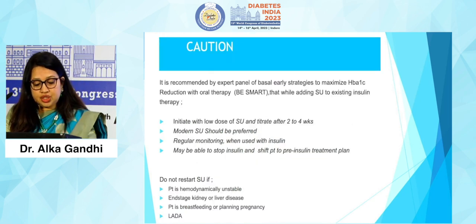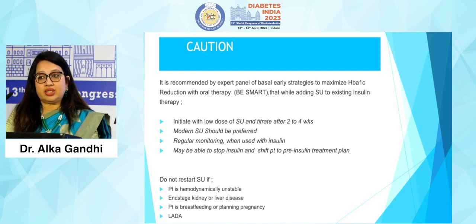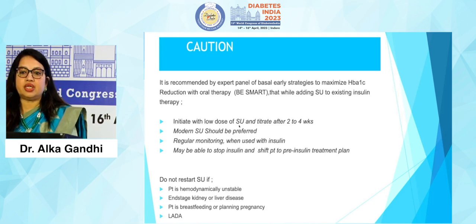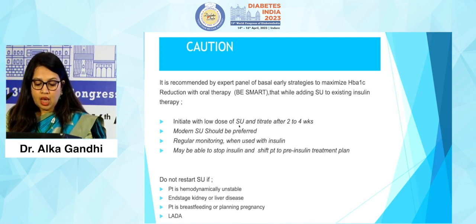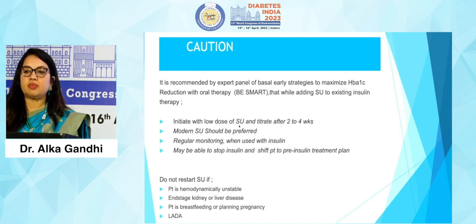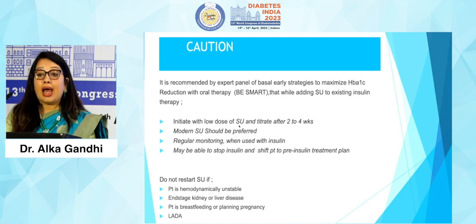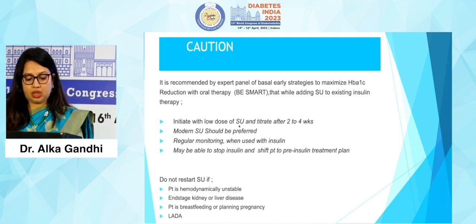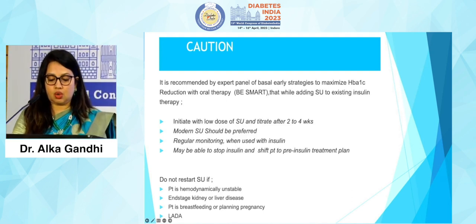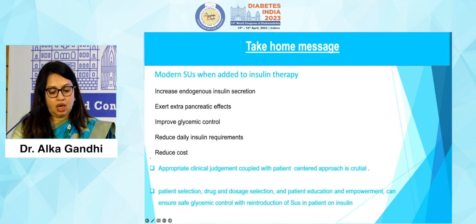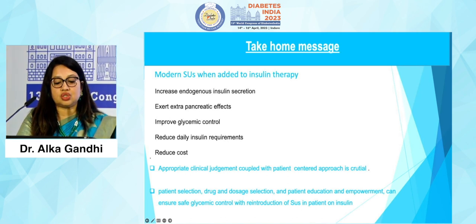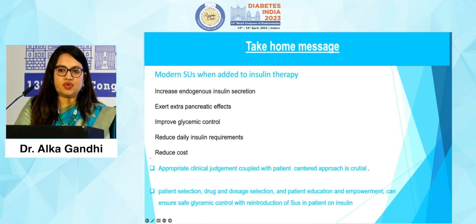Cautions: initiate low-dose SU and titrate after 2 to 4 weeks; modern SUs like glimepiride and gliclazide should be preferred; regular monitoring should be done especially when titrating insulin dose alongside SU; the patient may be able to stop insulin if well controlled. Do not restart SU if the patient is hemodynamically unstable, has end-stage liver or kidney disease, is breastfeeding, planning pregnancy, or is found to have LADA. In summary, you can add SU in patients who are not controlled; patient-centered approach is needed; SU reduces cost and improves glycemic outcomes; but patient selection, drug and dose selection, and patient education and empowerment are very important when planning reintroduction of SU in type 2 diabetic patients.